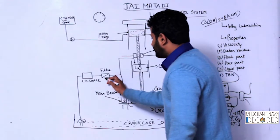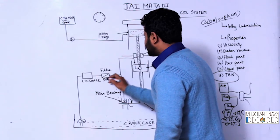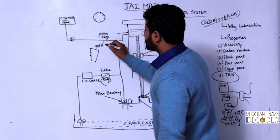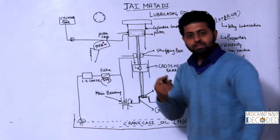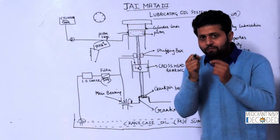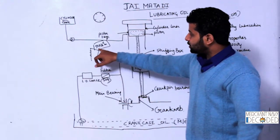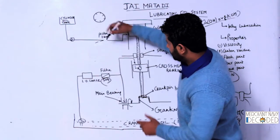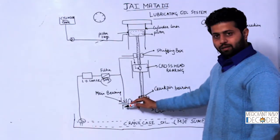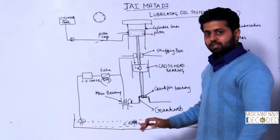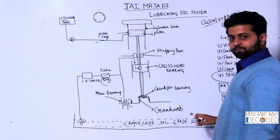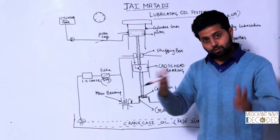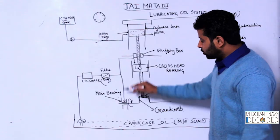The filter has a very fine mesh of 50 microns — that is, 50 × 10⁻⁶ metres — so anything larger than that is caught in the filter. After the filter, the oil branches: one branch goes to the main bearings. Since the engine has multiple units — for example, 6 units means 7 main bearings, 7 units means 8 main bearings — the oil is distributed to all main bearings.